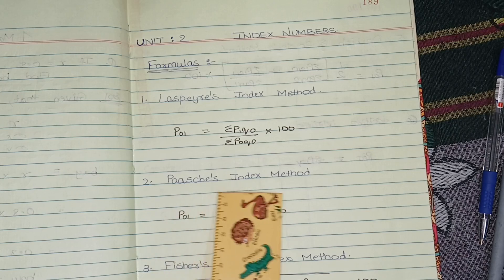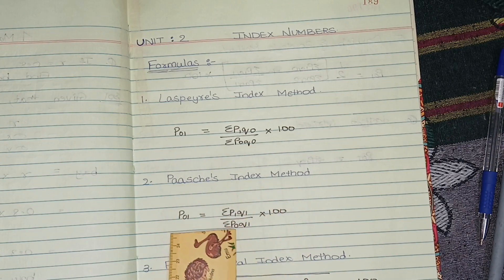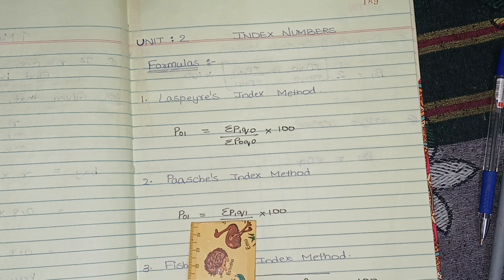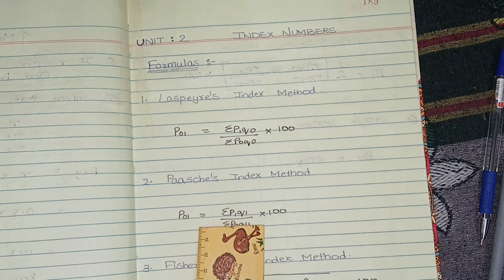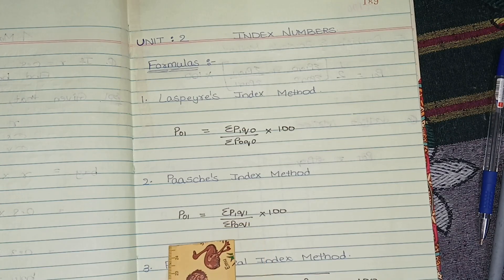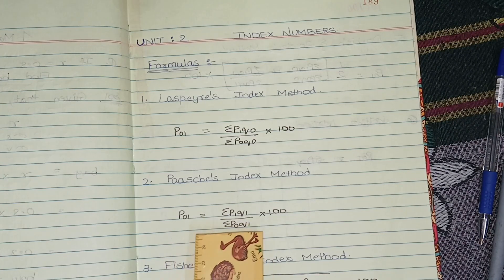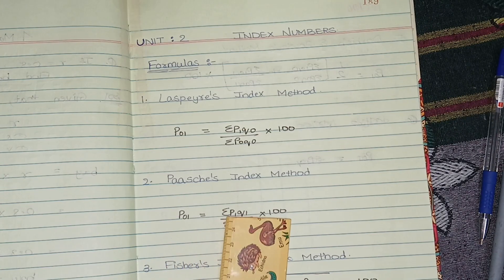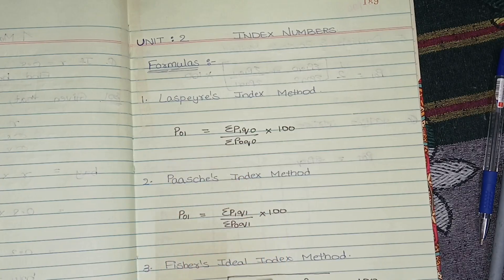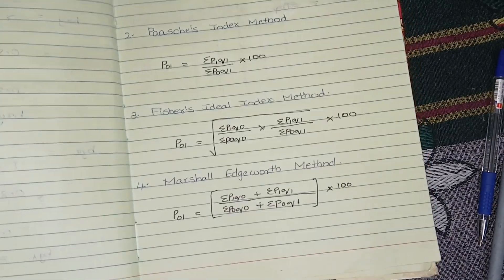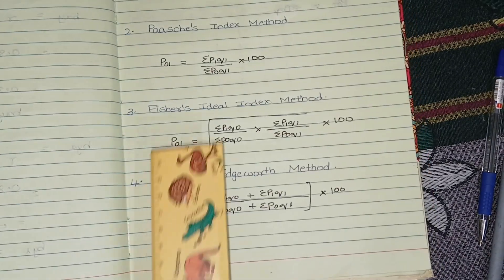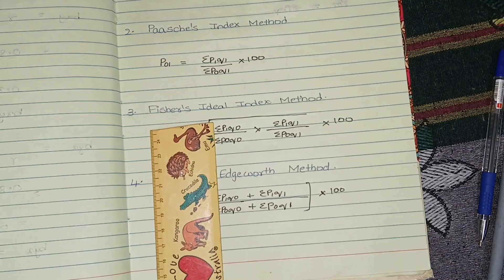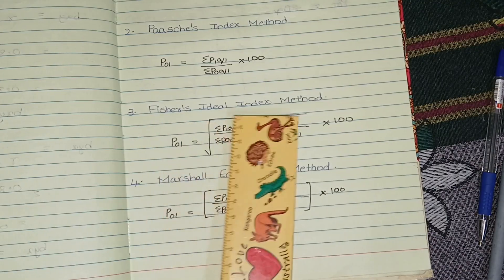Next you have Paasche's index method. The formula is: P1 = (Σp1q1 / Σp0q1) × 100. This is the Paasche's formula. Next you have Fisher's ideal index number.